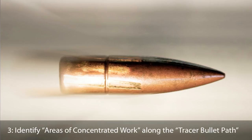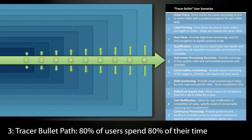The next step is to identify the areas of concentrated work along what we call the tracer bullet path — where 80% of the users spend 80% of their time. An area of concentrated work, for example, would be a kitchen in a home. In most key pieces of software, there are three to nine areas of concentrated work, a surprisingly small number that makes up the bulk of where people spend their time.